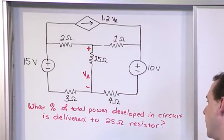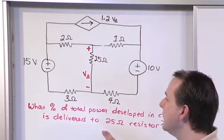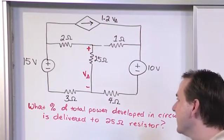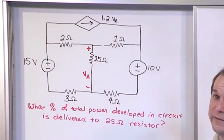And to cap it off, what we're asked to do is find out what percentage of the total power developed in this circuit is delivered to the 25 ohm resistor.